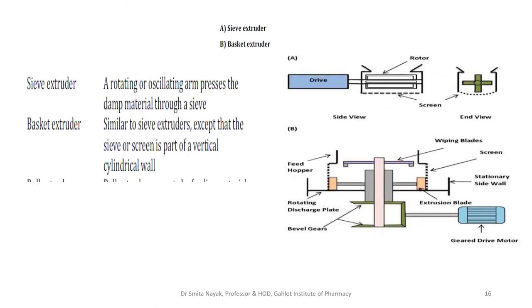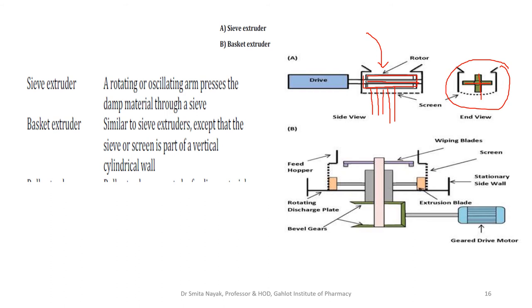In the sieve extruder, a rotating or oscillating arm in the center presses the material through the sieve. You don't have a screw here — you have a cylindrical arm which is rotating. The wet mass is fed in and pressed by this arm, coming out in the form of thin cylinders through the sieve attached at the bottom. There are actually two arms which press the wet mass downwards, resulting in the formation of long thin cylinders.